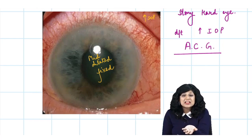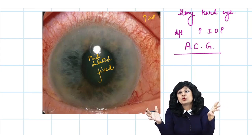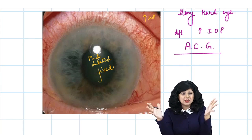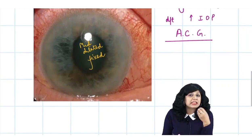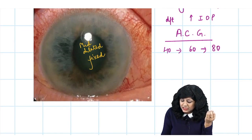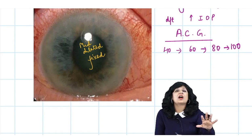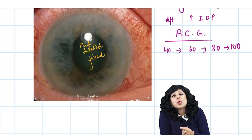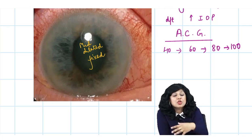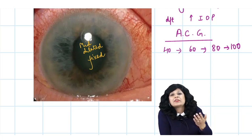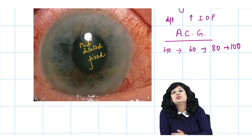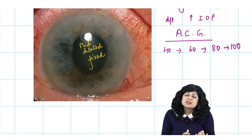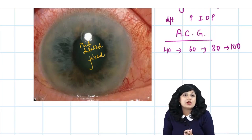In acute congestive glaucoma, there is a sudden increase in intraocular pressure due to total closure of the angle of the anterior chamber. When the angle closes suddenly, the IOP rises dramatically — 40, 60, even up to 100 mmHg. The eye is stony hard and the patient is in immense pain and great agony. Acute angle closure glaucoma is more common in females, especially middle-aged females.